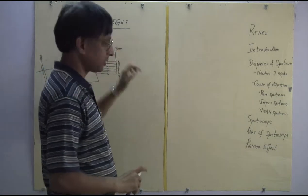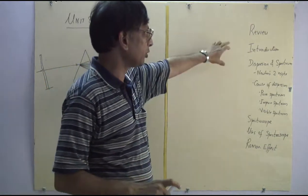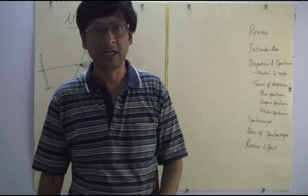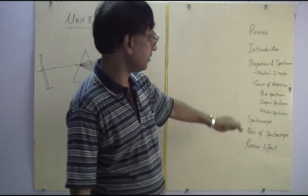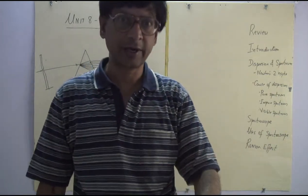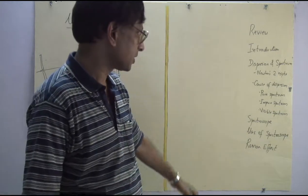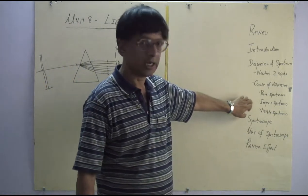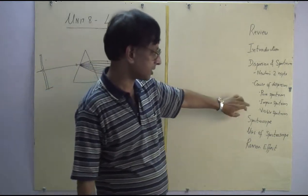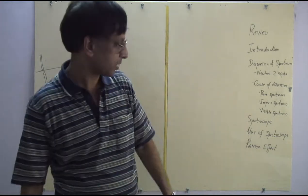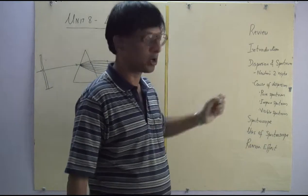Welcome to this session on light, which is part of Unit 8. In this session we will look at the following aspects: a brief review of what we have learnt so far, then dispersion and spectrum, the two experiments Newton conducted, what causes dispersion, pure and impure spectrum, visible spectrum, the spectroscope and its uses, and finally the Raman effect.